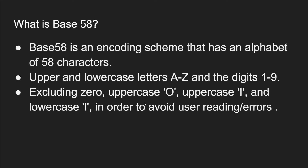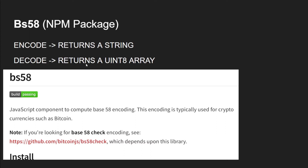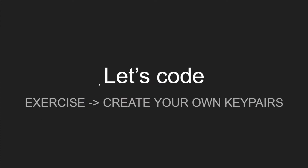Base58 is an encoding scheme with an alphabet of 58 characters. You can convert an array of integers — a representation of the private key — to a string consisting of 58 letters, excluding 0, uppercase O, uppercase I, and lowercase l, in order to avoid reading mistakes. Using the bs58 npm package, when you encode you pass a Uint8Array and get back a string, and when you decode you pass a string and get back a Uint8Array.